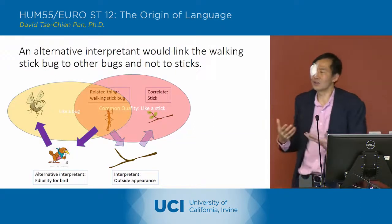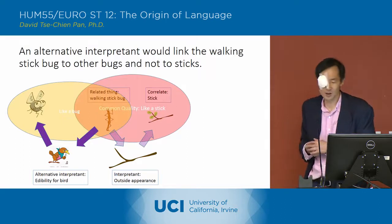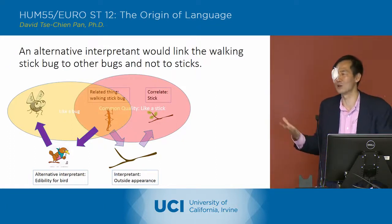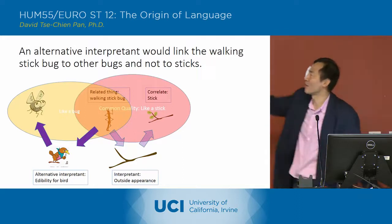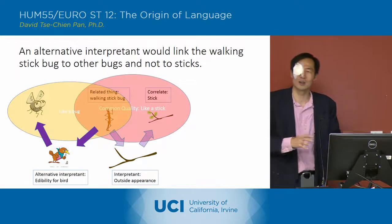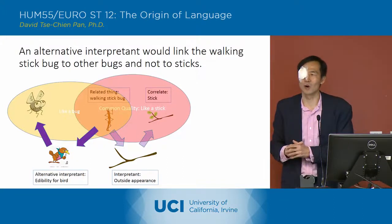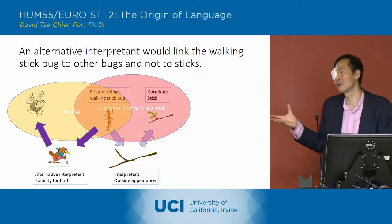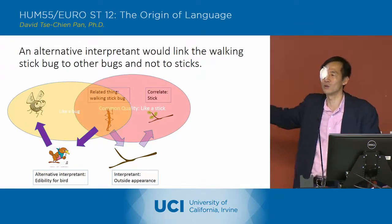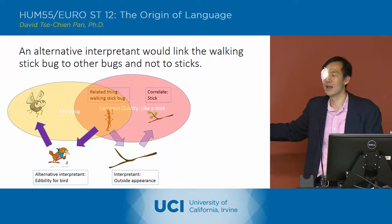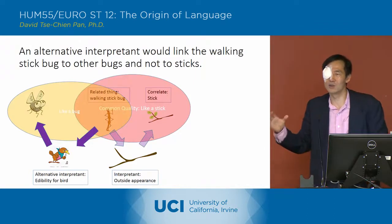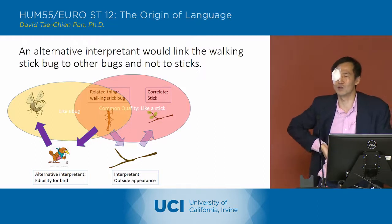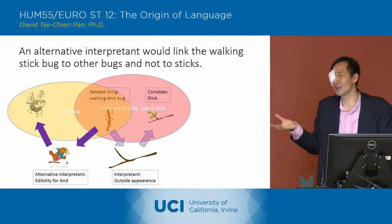There is a possibility of an alternative interpretant. The current interpretant is outside appearance, whereas another interpretant might be edibility for the bird — something good to eat. In that case, we would have to reassign the walking stick bug to a grouping with other bugs, rather than grouping it with twigs and trees. So there is actually an interpretant controlling this relationship, and a different interpretant could break it and set up a different set of relationships for the walking stick bug instead.